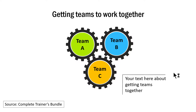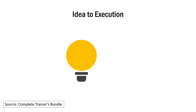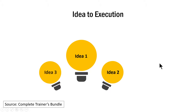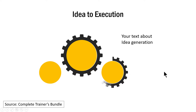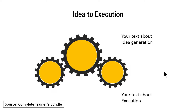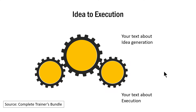Let me show you another template from Complete Trainers Bundle. This template helps us communicate the concept of idea to execution. First we talk about the idea generation stage, then the execution stage. On click 1 I bring in Idea 1, then on the next click Idea 2, and then Idea 3. This allows enough time to give details about each idea to my audience, and I can replace the placeholder text with the actual idea I want to talk about. Once I finish talking about the idea generation stage, I click and go to the next object which is about execution. The gears come into place and now I can talk about the execution phase.